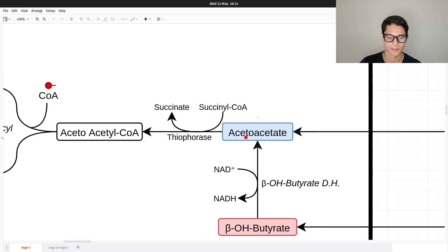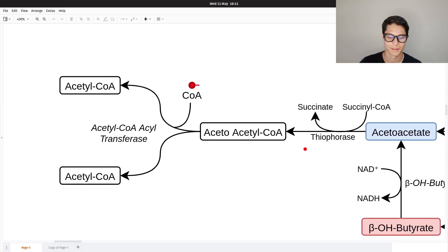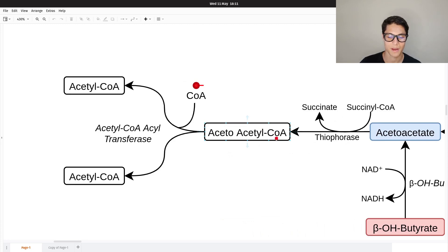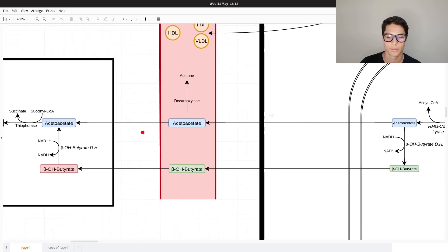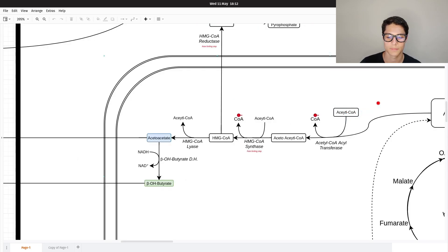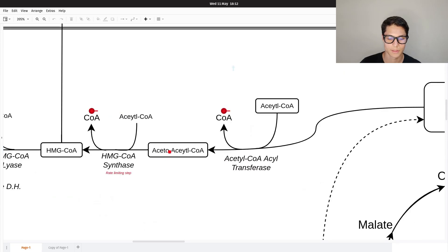Once we have acetoacetyl-CoA, we can just split it because this is the union of two acetyl-CoA. We just add a CoA and we get two molecules of acetyl-CoA using the acetyl-CoA acetyltransferase, the same enzyme we used before for creating acetoacetyl-CoA.